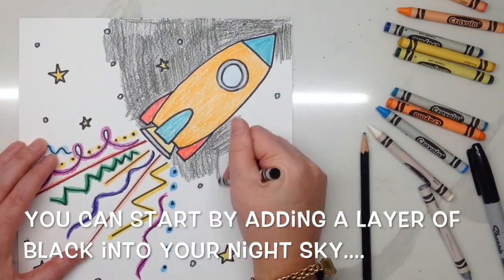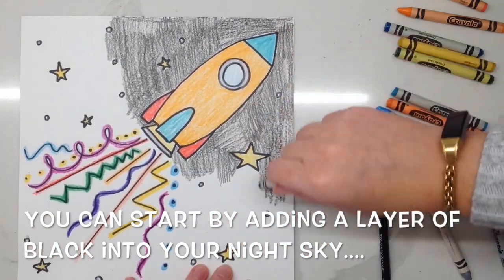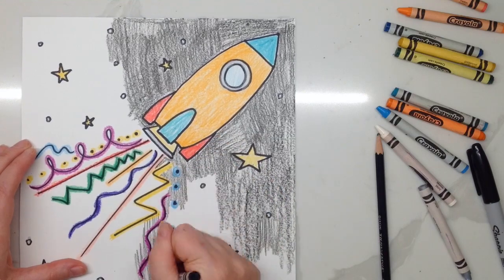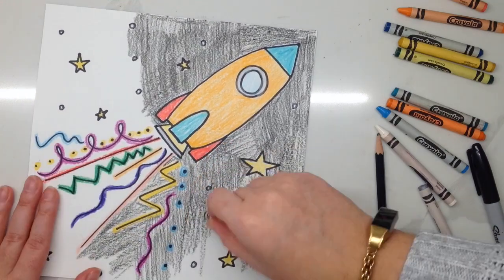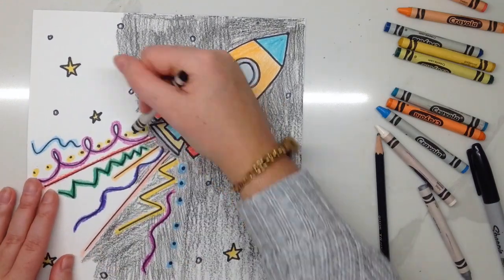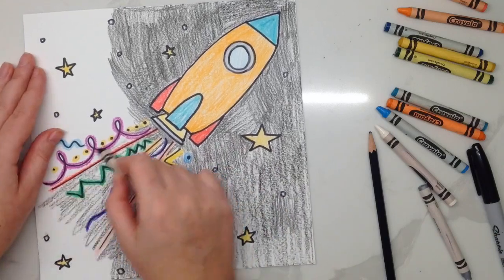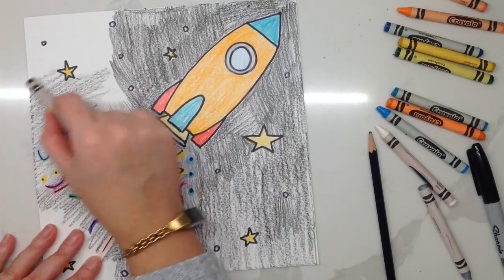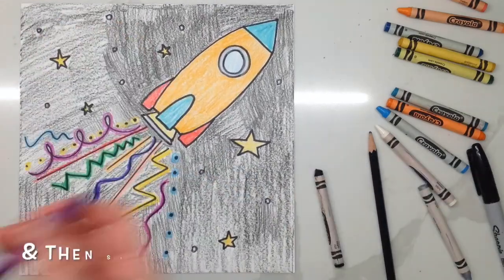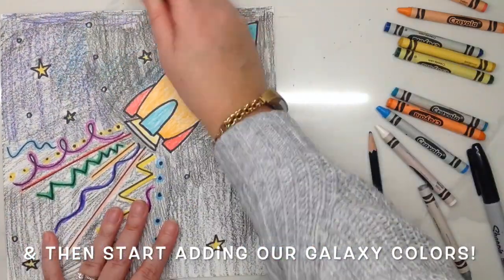You can start by adding a layer of black into your night sky. You don't want to make it super dark because we're going to go back in, and we're going to add other layers of color on top to create that galaxy effect. When you're going over your rocket's exhaust, don't cover up your lines with the black. You don't want to cover up your hard work.